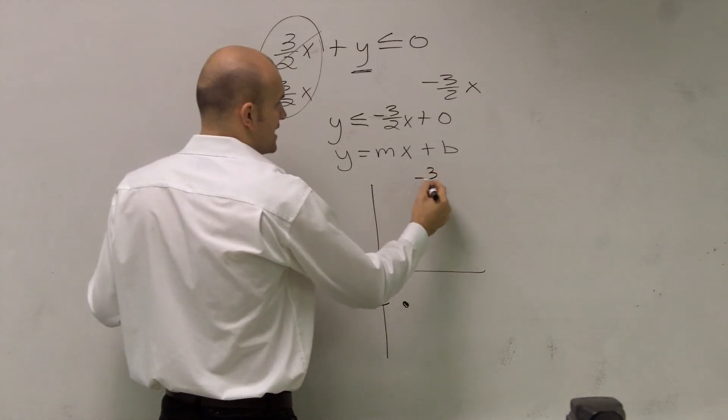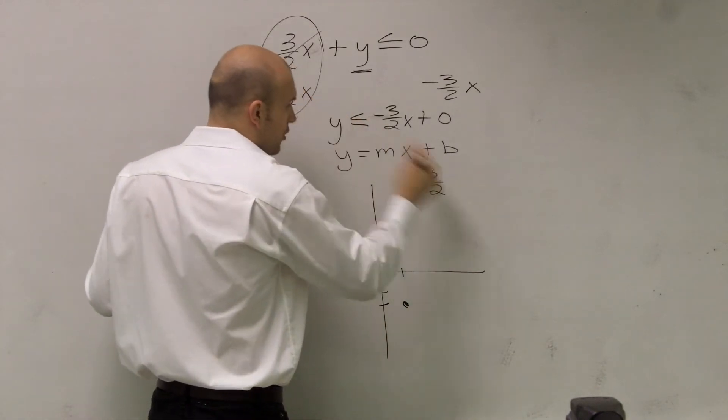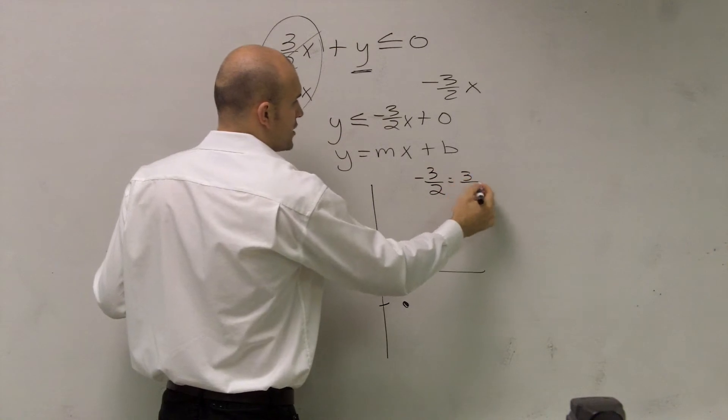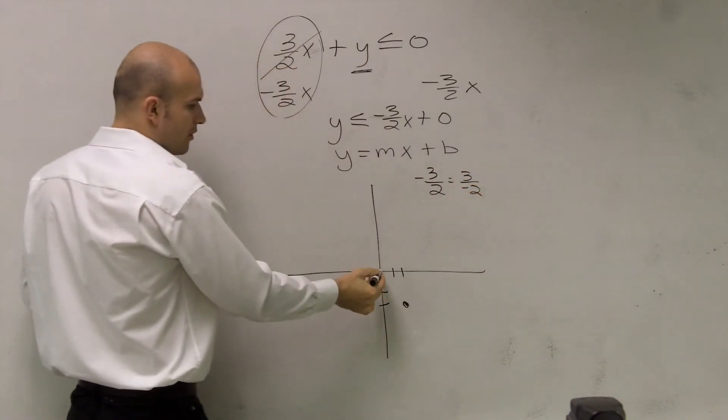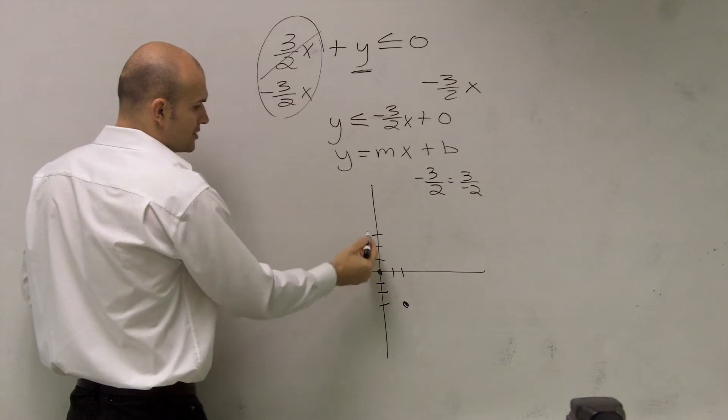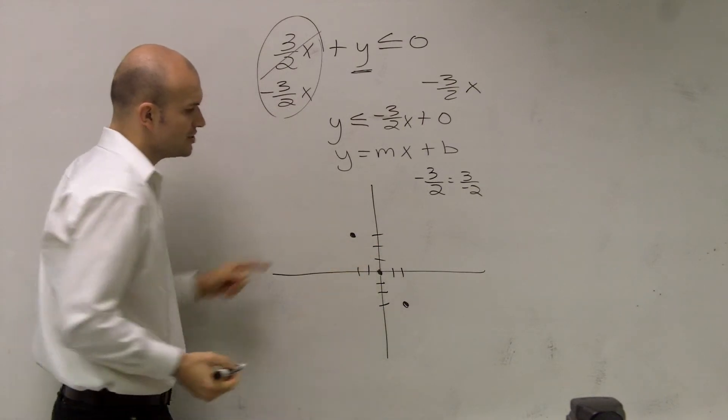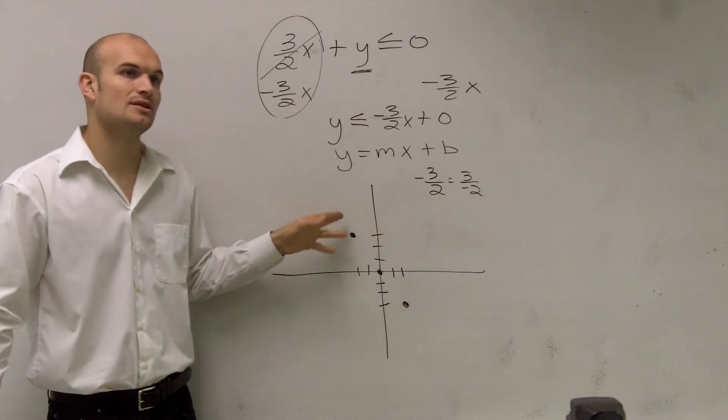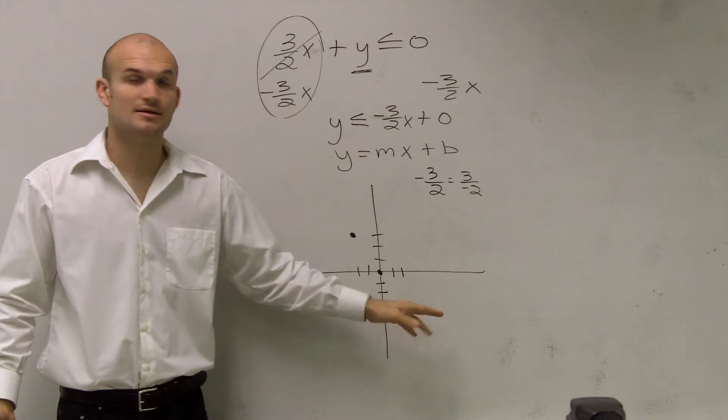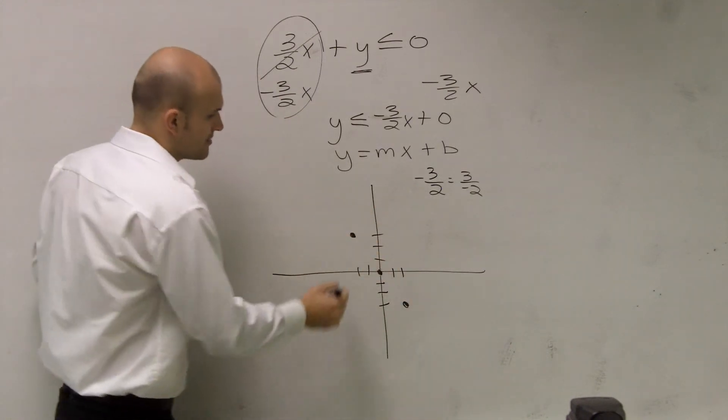Because you can have it as negative 3 halves or you can have it equal to 3 over negative 2. So I can go up 3 units, 1, 2, 3, and to the left 2. And what you guys notice is it doesn't matter if you go up and to the left or down and to the right, you're still going to have the exact same line.